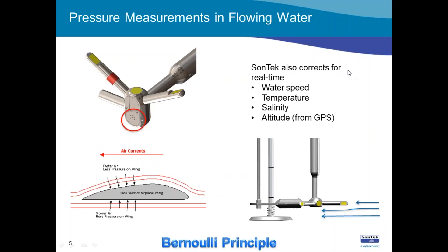As we worked on this project, it became clear that the Bernoulli principle is a huge correction factor. But SonTec also added rigorous corrections for temperature over the full operating range, salinity, and altitude. The altitude at which you're using the sensor affects water density, and water density affects the amount of pressure it puts on the sensor. We can correct for altitude because the FlowTracker 2 has a built-in GPS. All of these corrections together offer a very good solution, and we actually have a patent pending on it.